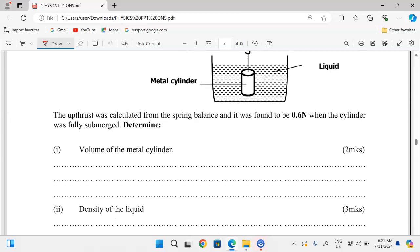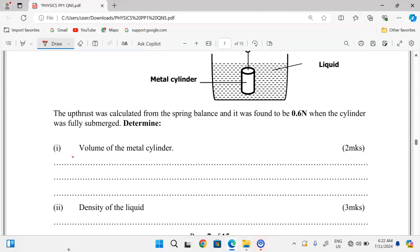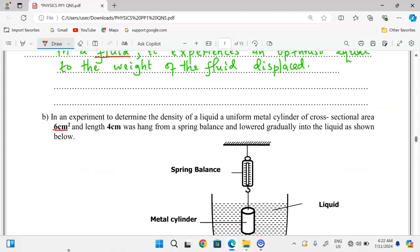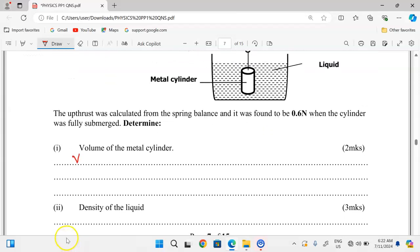Part one, we are asked to determine volume of the metal cylinder. Volume of the metal cylinder. Remember we are already given some dimensions so it's easy now to continue. We are told that the cross-sectional area is six square centimeters and the length four centimeters. So cross-sectional area multiplied by the length will always give volume for a cylinder.